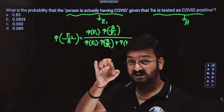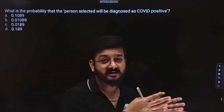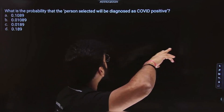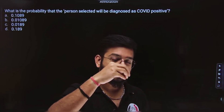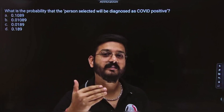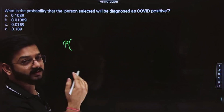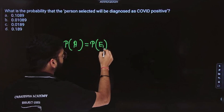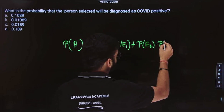Substitute the values in the comment box and write down the answer for this part. Let's take the last part of this question. They are telling: what is the probability that the person selected is diagnosed as COVID positive? This means what percentage of people tested will show COVID positive. There are two possibilities: first, I have COVID and the test is positive; second, I don't have COVID but the test is still coming as positive.